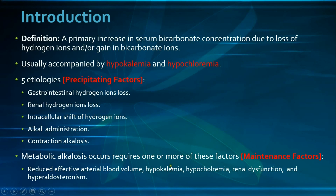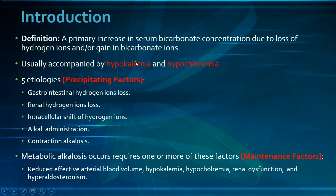Notably, while hypokalemia maintains metabolic alkalosis, metabolic alkalosis itself also causes hypokalemia. First, some causes of metabolic alkalosis involve volume depletion, triggering hyperaldosteronism, which causes hypokalemia. Second, excess bicarbonate exceeds the renal bicarbonate reabsorptive capacity, increasing sodium bicarbonate delivery to the distal tubules, where sodium is reabsorbed in exchange for potassium and hydrogen ions, resulting in hypokalemia.